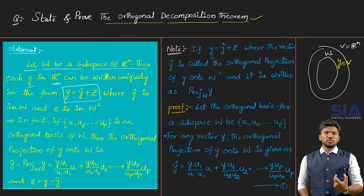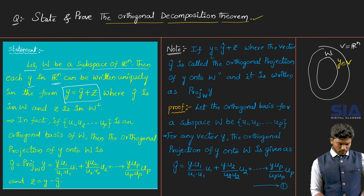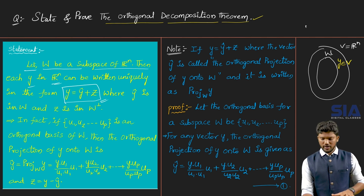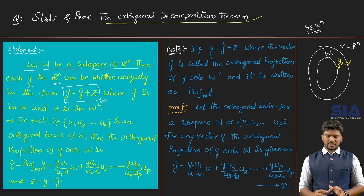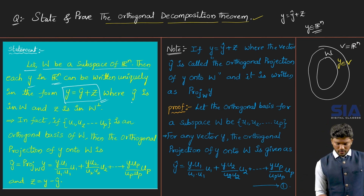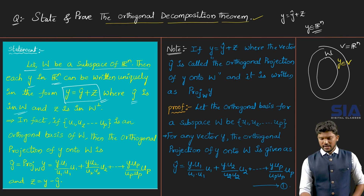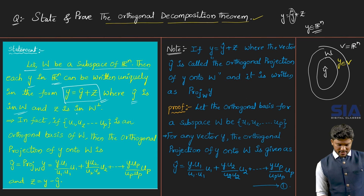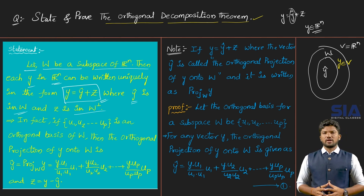For each small y in R^n, that vector can be written in the unique form: y equals y-hat plus z. If you take any vector small y belonging to R^n, that vector can always be uniquely written as y equals y-hat plus z, where y-hat is a vector in the subspace W, and z is in the orthogonal complement of W.